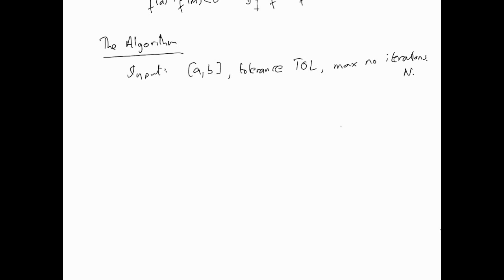Now, the output of this algorithm will be approximate solution or a message of failure. So, it's either the solution, we'll call it R, or failure. Means that the bisection method was not successful in finding the root, at least not to the tolerance that we wanted.